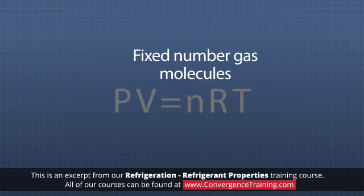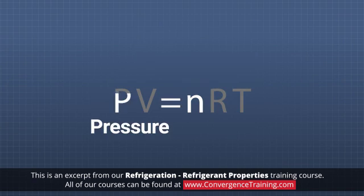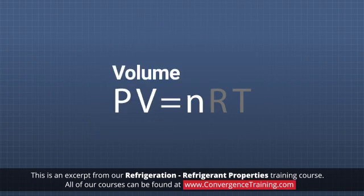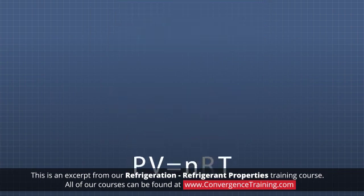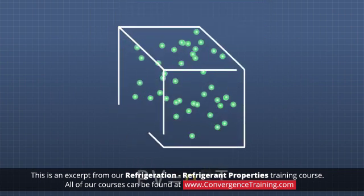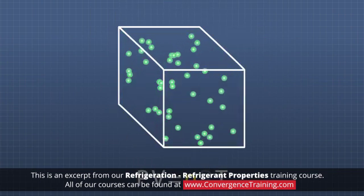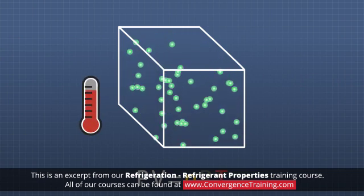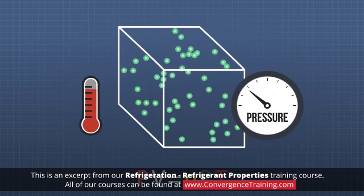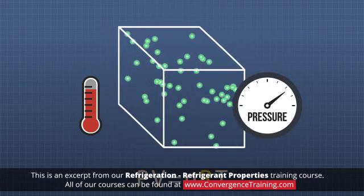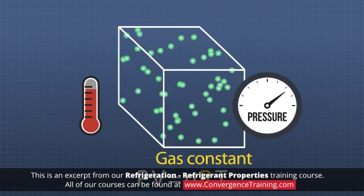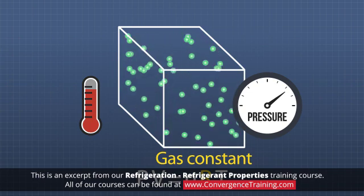For a fixed number of gas molecules, N, the relationship between pressure, P, volume, V, and temperature, T, can be described by the ideal gas law. This law states that if the number of molecules doesn't change, an increase in the temperature of a gas will cause its pressure and or volume to increase. In this equation, R is equal to the gas constant, a value that doesn't change.